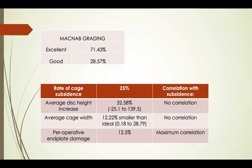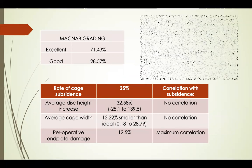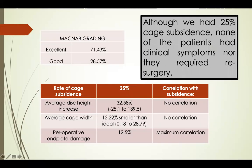On MACNAB grading, we had 71% excellent results and 28.57% good results. The rate of cage subsidence was 25%. The average disc height increase was 32.58%. Average cage width was 12.22% smaller than ideal and had no correlation with cage subsidence. There were 4 cases of peri-operative endplate damage in 12.5% of cases, and this had the maximum correlation with cage subsidence. Although we had 25% cage subsidence, none of the patients had clinical symptoms nor required re-surgery.